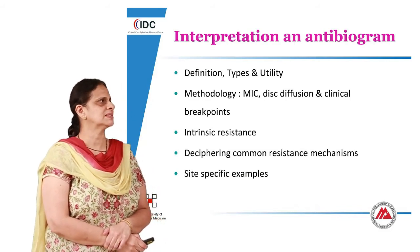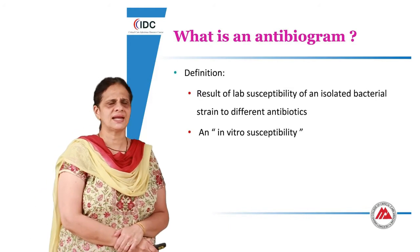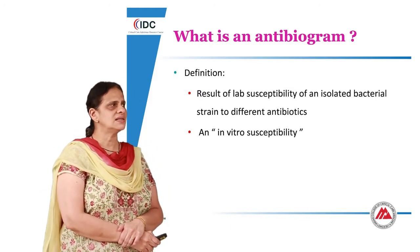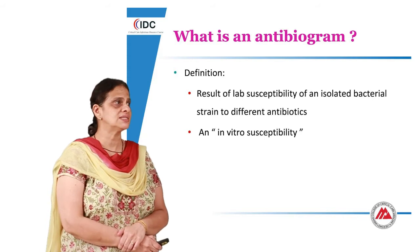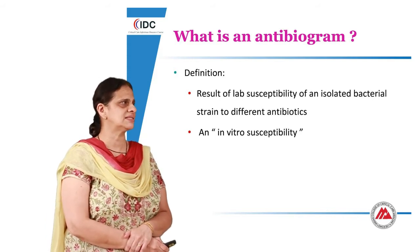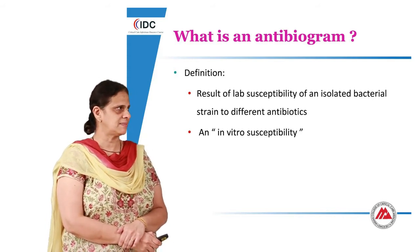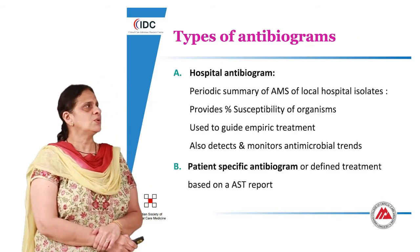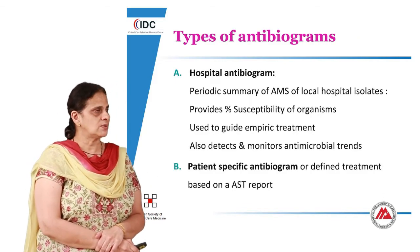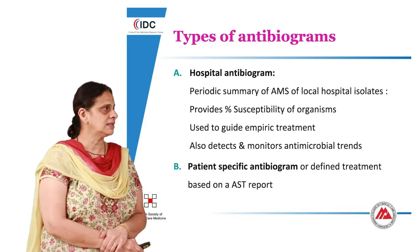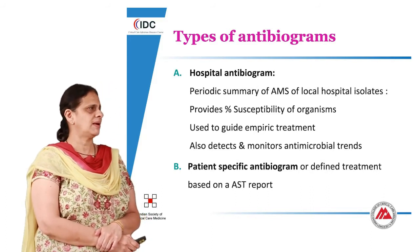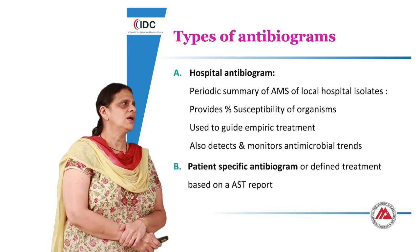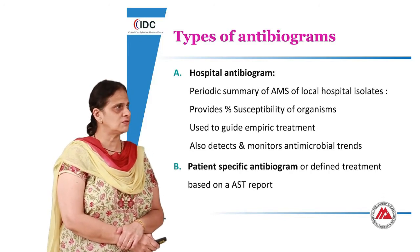What exactly is an antibiogram? By definition, it is the result of lab susceptibility testing of an isolated bacterial strain to different antibiotics — essentially an in vitro susceptibility test. There are two types: the hospital antibiogram and the patient-specific antibiogram.